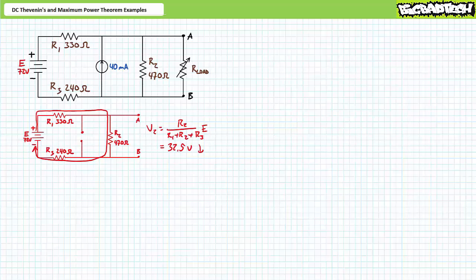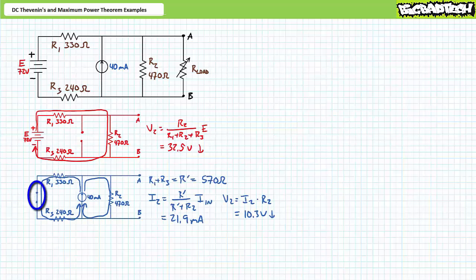Now let's determine the open circuit voltage based on the contributions of the current source. With the voltage source removed by replacing it with a short circuit, the current source sees R1 and R3 in series, and this series combination is in parallel with R2. The series combination of R1 and R3 presents a resistance of 570 ohms — call this R-single-prime, which is in parallel with R2. An application of the current divider rule demonstrates that I2 is 21.9 milliamps. A subsequent application of Ohm's law gives V2 as 10.3 volts, oriented positive to negative, top to bottom.